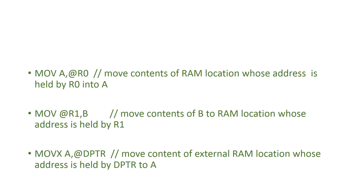For the register indirect addressing mode, an example is 'MOV A, @R0'. When you write @R0, the value in R0 is the address. The data at that address is moved to the accumulator. The '@' symbol indicates that R0 contains the address, not the data itself.